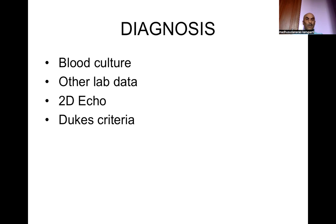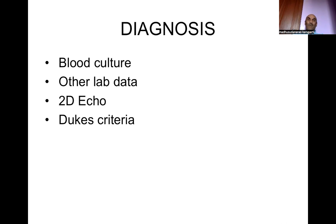Other laboratory data like blood counts, ESR, and CRP should be carried out. 2D echocardiography shows the presence of vegetations. The size, site, and type of vegetations are to be recorded. If the size of a vegetation is more than two centimeters and the vegetations are pedunculated, there is always a risk of embolization. Apply the Duke criteria for diagnosis.